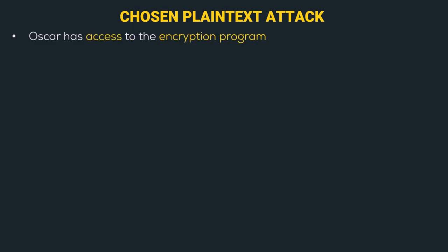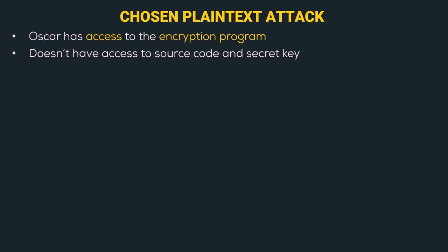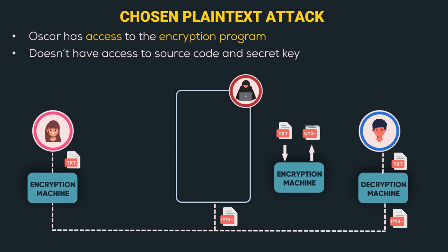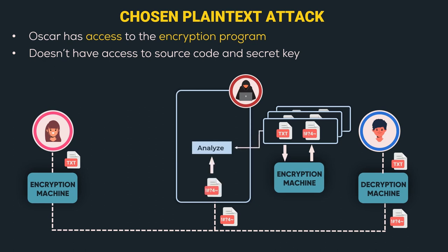The next is the chosen plaintext attack. Here Oscar has access to the encryption program — however, he doesn't have access to the source code or secret key. Oscar inputs his chosen plaintext and gets the corresponding ciphertext, giving him a plaintext-ciphertext pair. He generates more such pairs in the same fashion. The analyze function then receives the intercepted ciphertext and all these chosen plaintext-ciphertext pairs for analysis to obtain the plaintext.